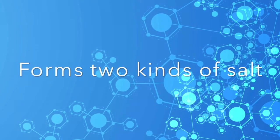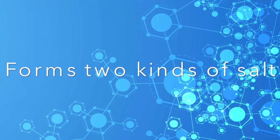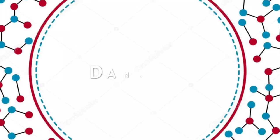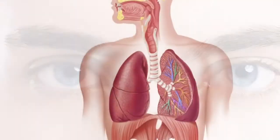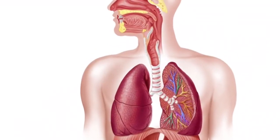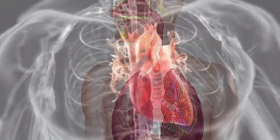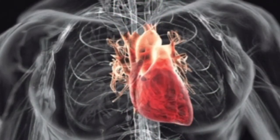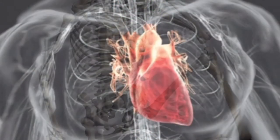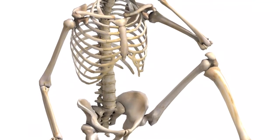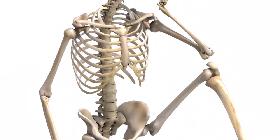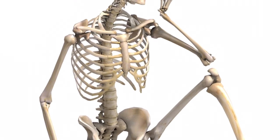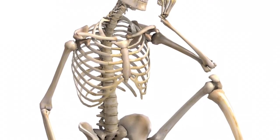Carbonic acid forms two kinds of salts: the carbonates and the bicarbonates. Although carbonic acid is not considered to be harmful to us, when exposed to high concentrations it can irritate the eyes and our respiratory tract. Too much acid can slowly disintegrate your bones and teeth, but we have an enzyme called carbonic anhydrase that helps prevent this.